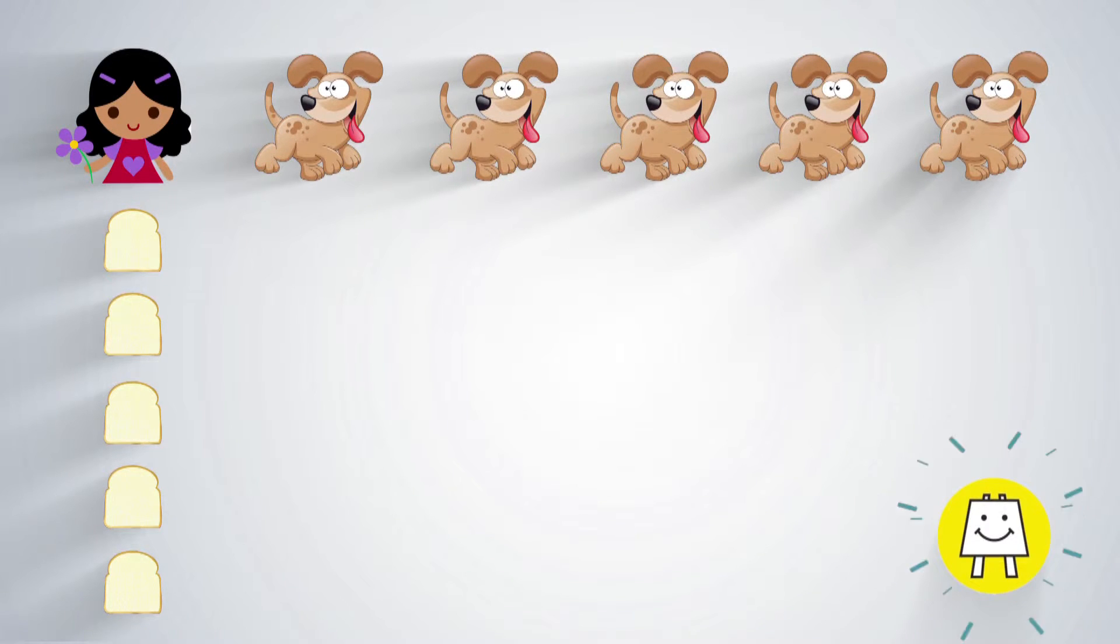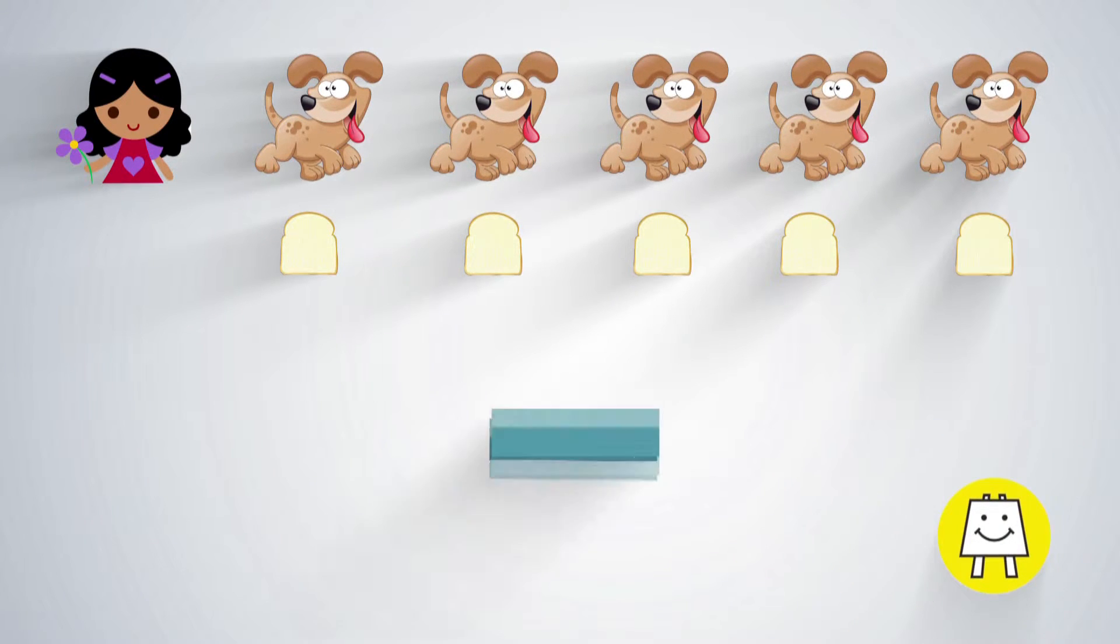Now, if 4 other dogs join, how many slices of bread will each dog get? Now, there are 5 dogs and hence, Mamta gives 1 slice to each dog.